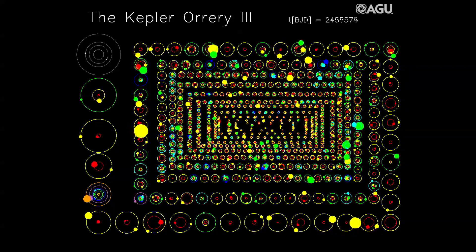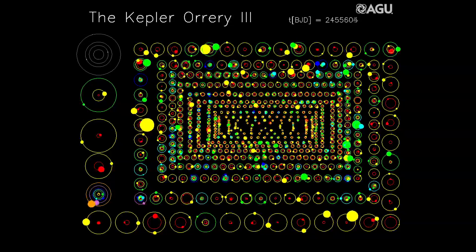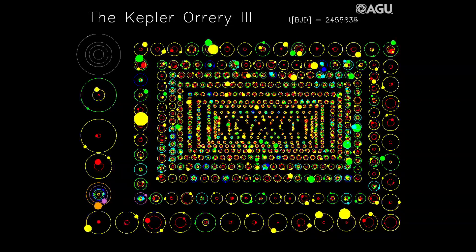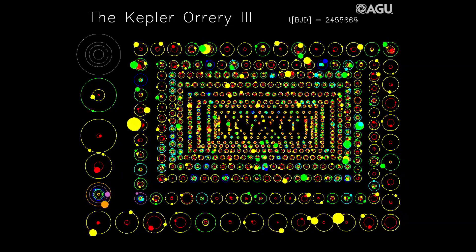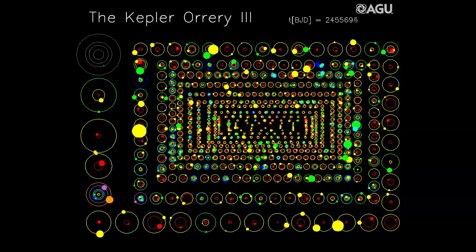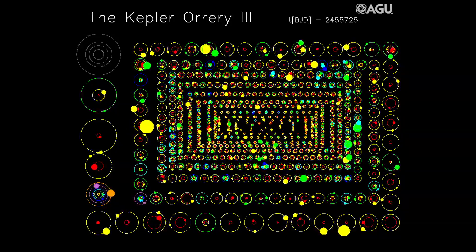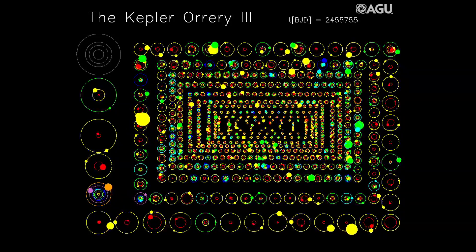The orbital speeds and orbital sizes are all shown to scale, with the inner four planets in our solar system represented in the diagram at the upper left of the movie.